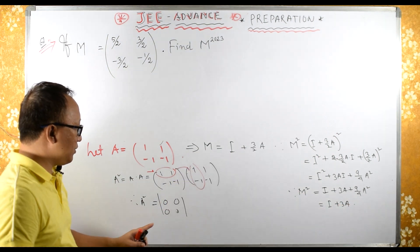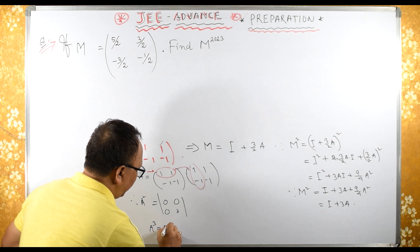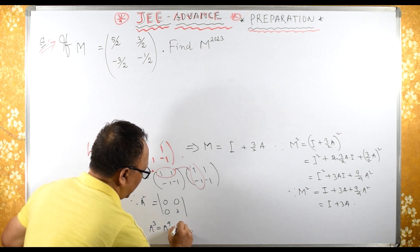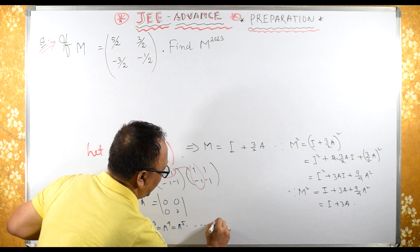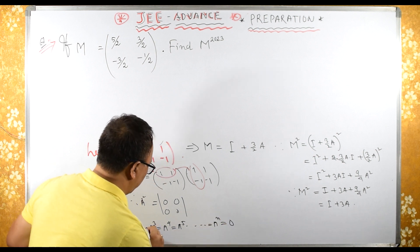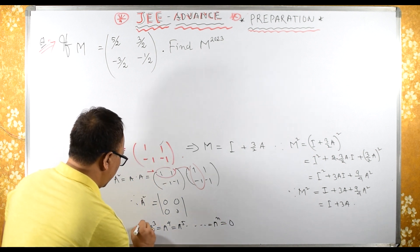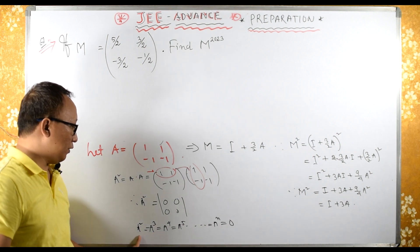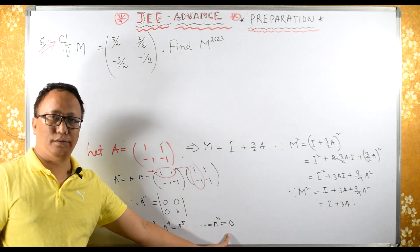Since A squared is 0, A cubed equals A squared times A, therefore all multiples of A squared will be 0. So any power of A greater than or equal to 2 is zero.